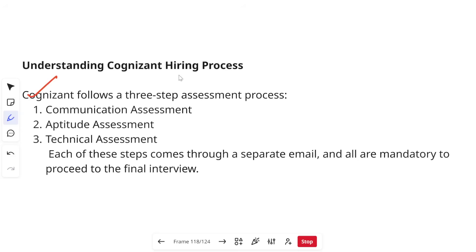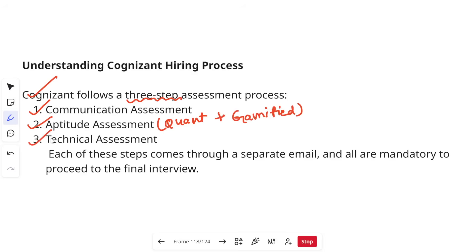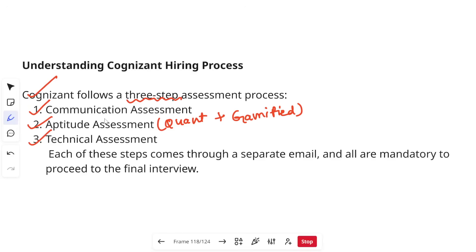Cognizant follows a three-step assessment process. The first assessment is your communication assessment. Then comes your aptitude assessment, which has two things: quantitative and gamified sections. The third assessment is your technical assessment. Each of these steps comes through a separate email and all are mandatory to proceed to the final interview. You have to understand that these three are different examinations in themselves. Don't get confused that your aptitude and technical are one round — they are individual rounds.